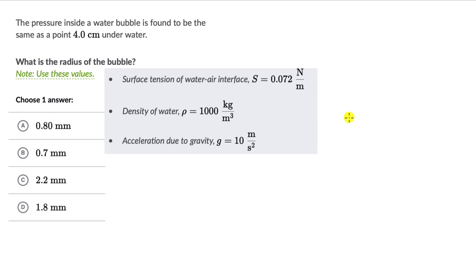Let's solve a couple of questions on excess pressure inside liquid drops. For the first one, we have the pressure inside a water bubble is found to be the same as a point 0.4 cm underwater. What is the radius of the bubble? We can use these values and we need to choose one answer out of these four options.